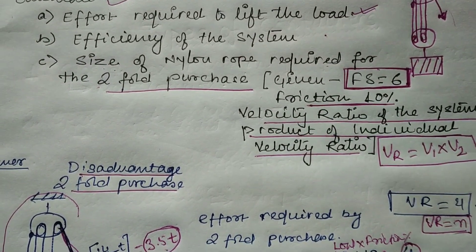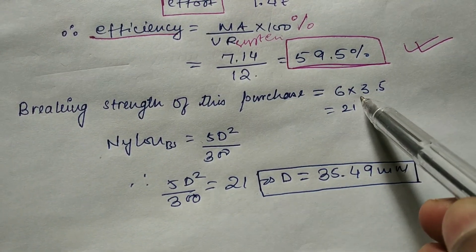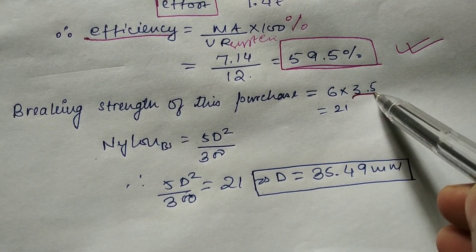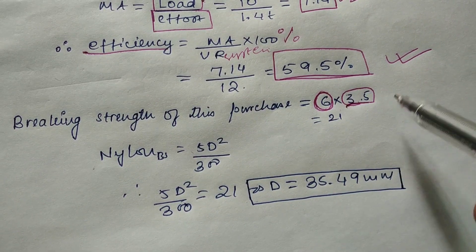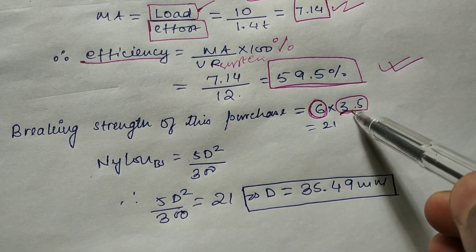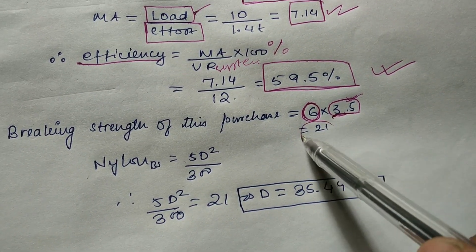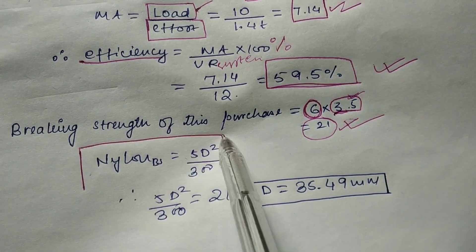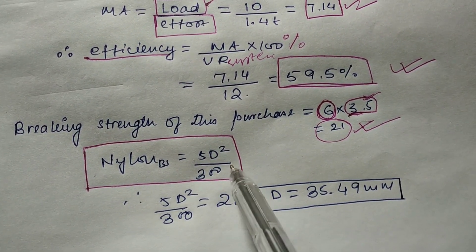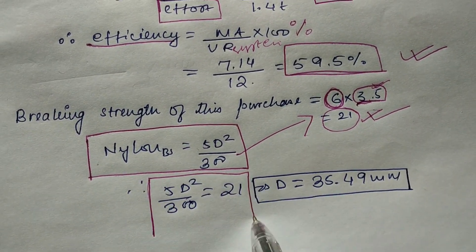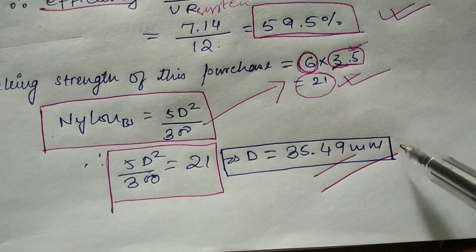The third part is to find the size of the nylon rope required for the two-fold purchase. The tension in the two-fold purchase is 3.5 tons, calculated in the first part. Breaking strength equals safe working load multiplied by factor of safety: 3.5 × 6 = 21 tons. Using the formula for nylon rope breaking strength, 5d²/300 = 21, solving gives diameter d = 35.49 mm.